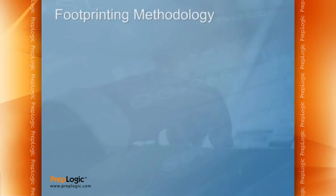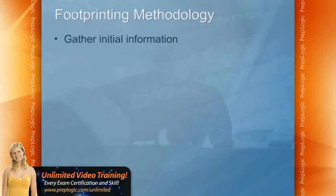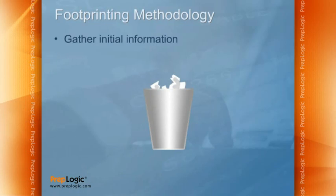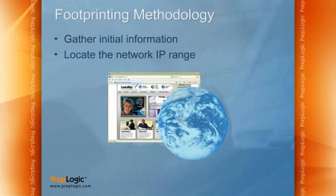There is a methodology defined by the EC Council that we can use to gather this information. The process includes, first, gathering any initial information you can — the easy-to-find information, such as stuff from the website or information gathered through dumpster diving. Then we want to locate the network IP range, which can be done by visiting websites such as ARIN and others that provide information about IP addresses assigned to an organization.